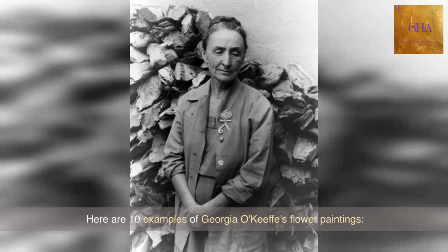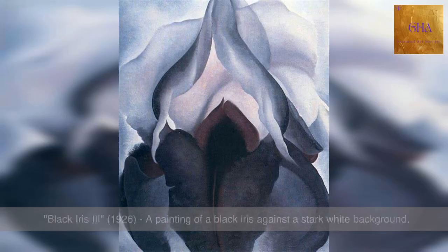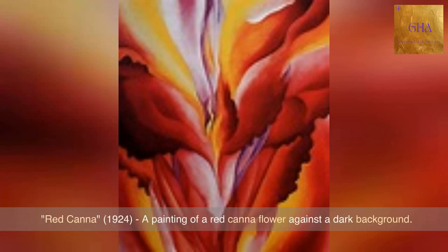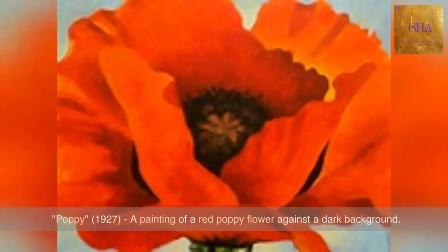Here are 10 examples of Georgia O'Keeffe's flower paintings. Black Iris 3, 1926: a painting of a black iris against a stark white background. Red Canna, 1924: a painting of a red canna flower against a dark background. Poppy, 1927: a painting of a red poppy flower against a dark background.